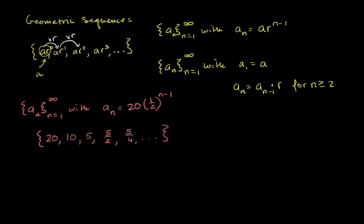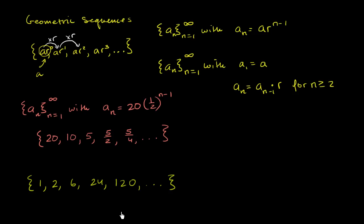Now let me give you another sequence — tell me if it's geometric: 1, 2, 6, 24, 120, and so on. To go from 1 to 2, I multiplied by 2. To go from 2 to 6, I multiplied by 3. To go from 6 to 24, I multiplied by 4. I'm always multiplying by a different amount, so this is not a geometric sequence — you have to multiply by the same amount for it to be geometric.